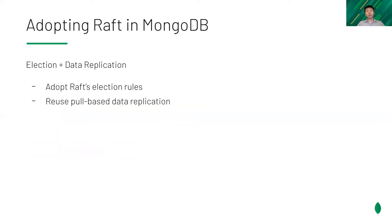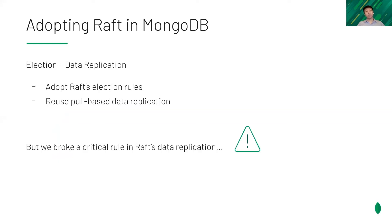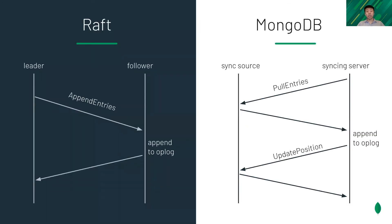We started to develop a new protocol by adopting Raft's election rules while reusing the pull-based data replication. However, we realized that we broke a critical rule that would affect safety. To understand why, let's dive deeper into the protocol. Append entries in Raft is replaced with pull entries and updated positions in MongoDB. After pulling and appending new data to the op-log, the syncing server reports its last entry's position via updated position, which will be forwarded upstream to the primary.